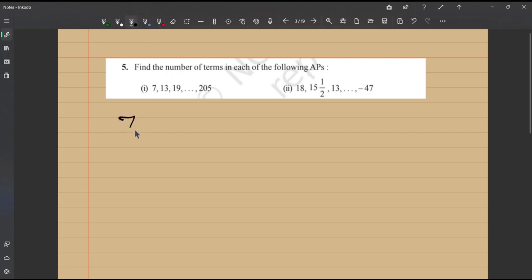The first term of the AP is 7, second term 13, 19 and so on till the last term is given as 205. So the first term stands for A, we call the first term as A, let us name it as A.